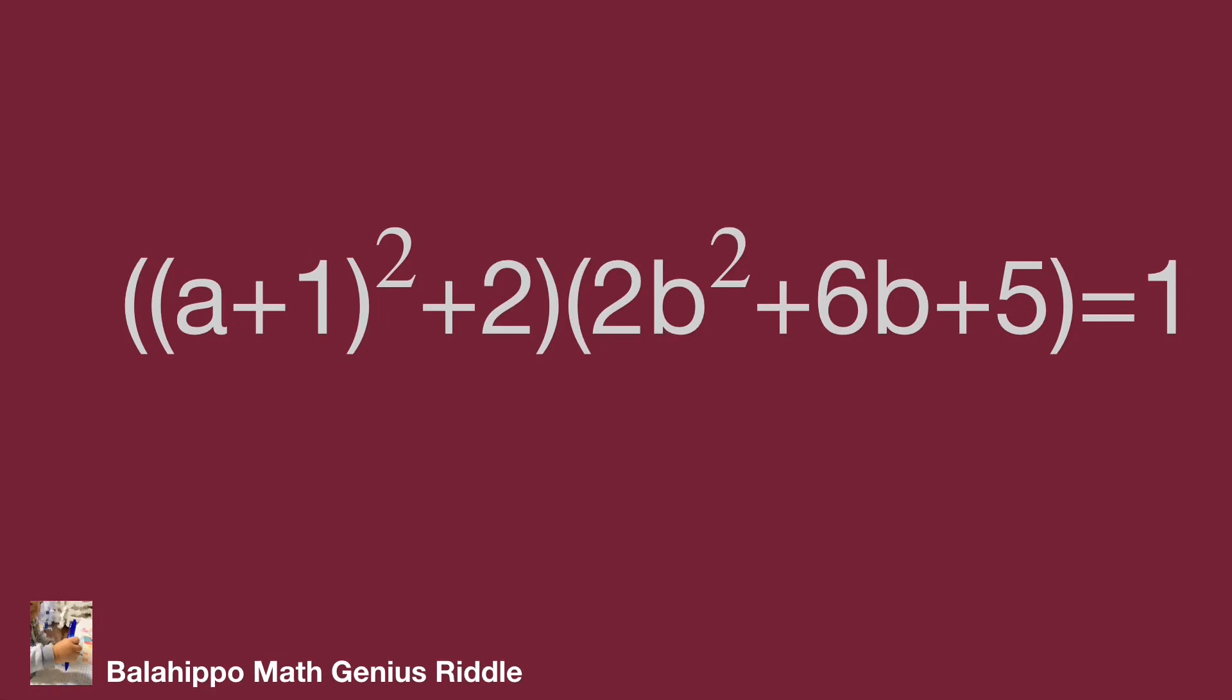Good. Now let's check the second quantity. Can I generate a square from them? We have 2b² + 6b. For easily generating squares...